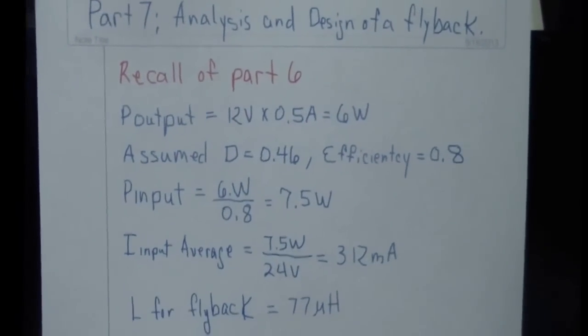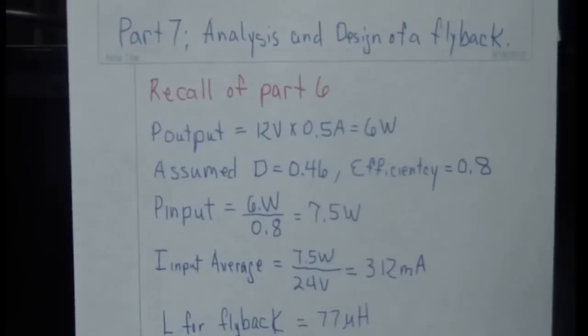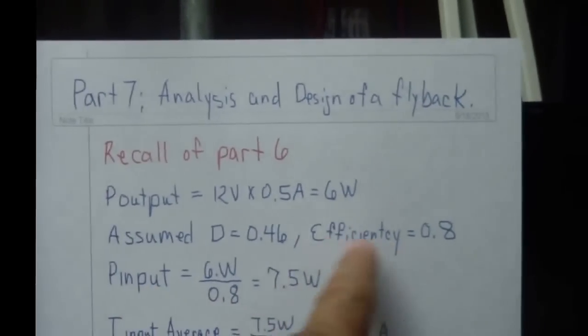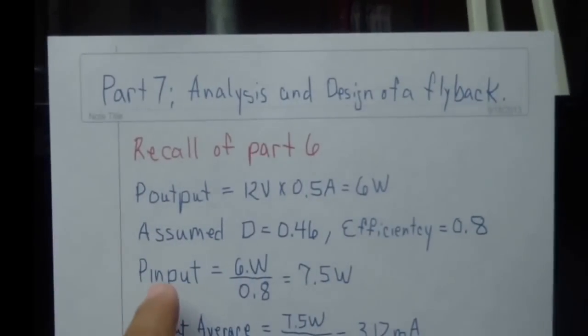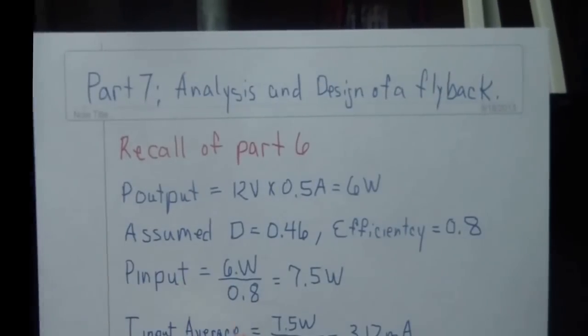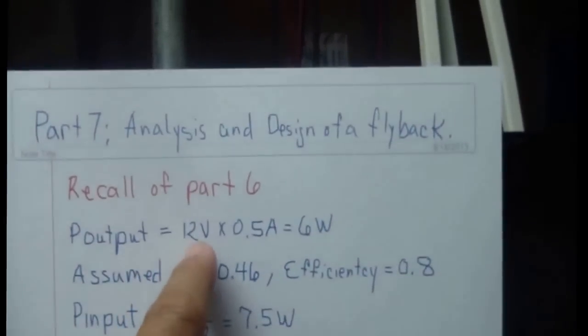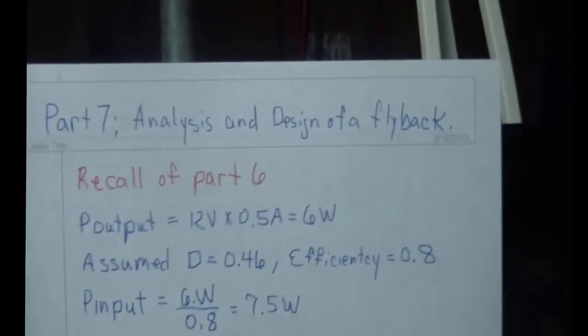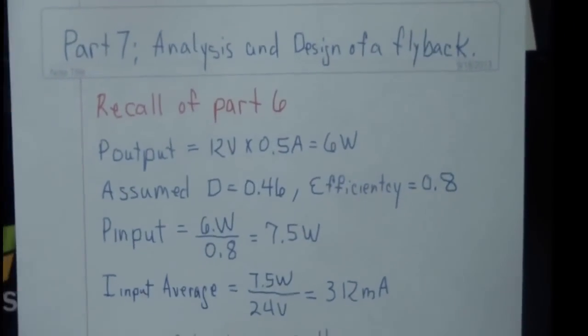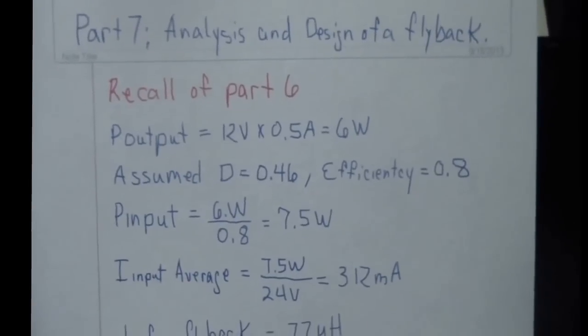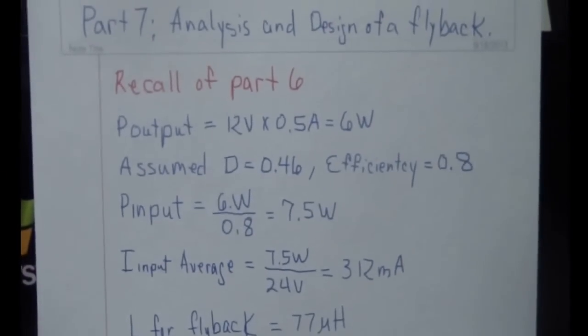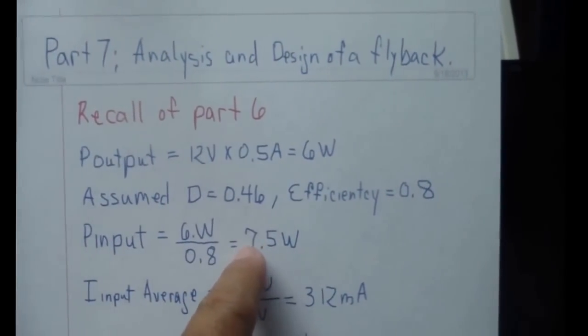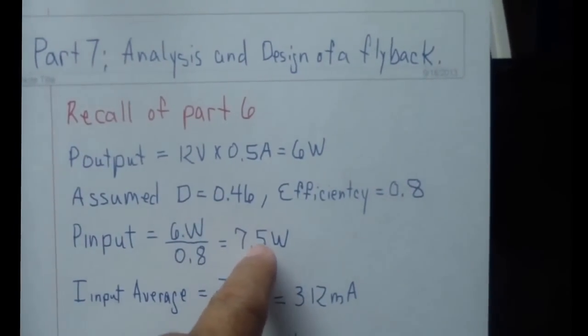Once you have these two factors, I went ahead and calculated the input power. Since the output power is supposed to be 6 watts because it's 12 volts times half an amp, which is what I designed it for, the output power is going to be 6 watts. So if you divide the 6 watts by the efficiency, you should have approximately an input power of 7.5 watts.